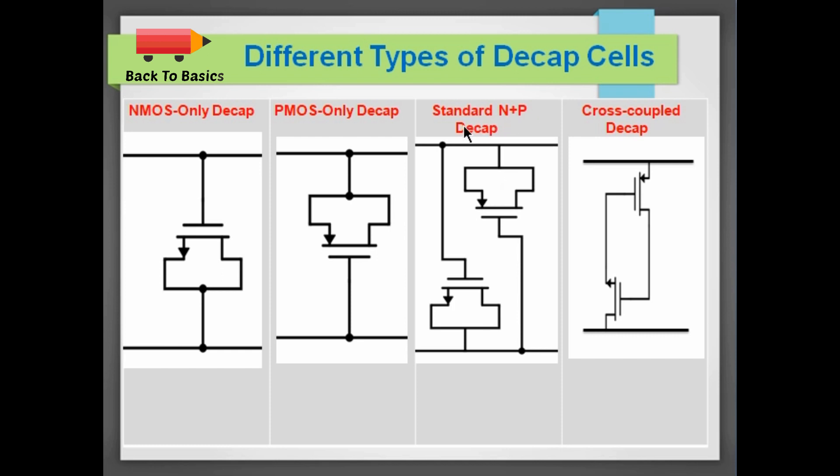This is a standard N plus P decap which used to be used earlier. But now for technologies below 90 nm, ESD risk has become a major concern. And this cross-coupled decap helps in preventing exactly that. Therefore now it is a trade-off between ESD performance and transient response.